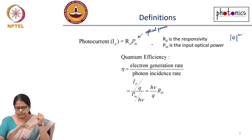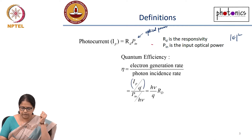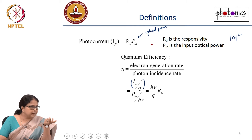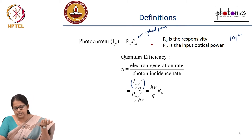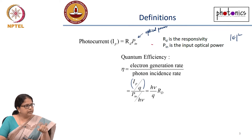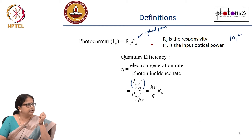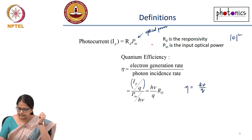The quantum efficiency η is defined as (I_P/Q) divided by (P_in/hν), where I_P is the photocurrent, I_P/Q gives the rate of electron generation, and P_in/hν gives the photon incidence rate — the number of photons per unit time. This can be rewritten as η = (hν/Q) × (I_P/P_in) = (hν/Q) × R_d. This is a very important relation — quantum efficiency is decided by these parameters.